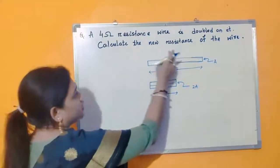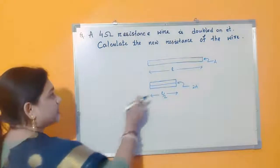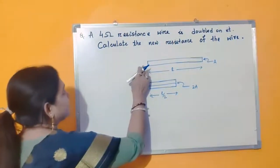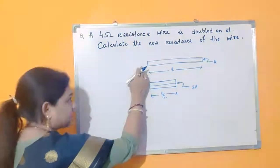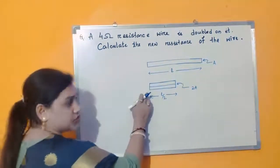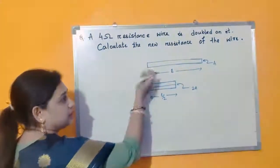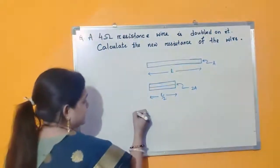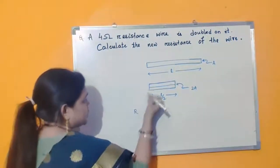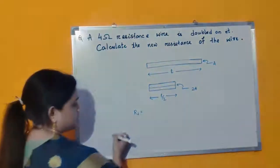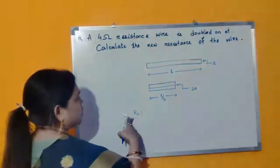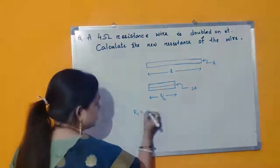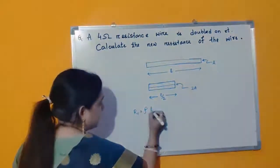So according to the question, calculate the new resistance of the wire. We are given that this is our original wire and it has resistance 4 ohm, and we have to calculate the resistance of this wire after folding. The resistance of the original wire is R1. R1 is equal to rho times L divided by A.